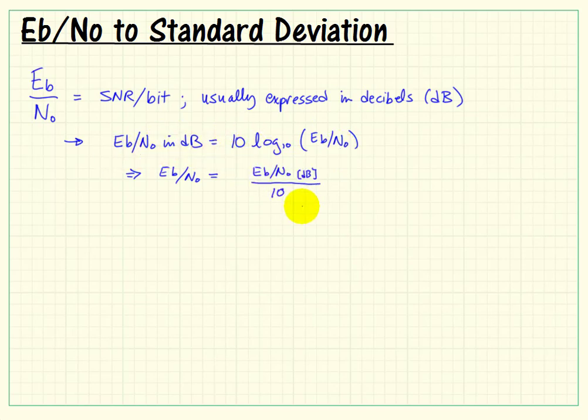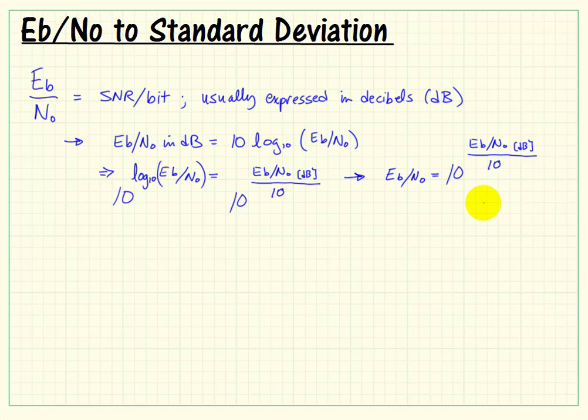If I divide both sides of the equation by 10, and also let's go ahead and keep the log base 10 in there, divide both sides of the equation by 10, and then use both sides of the equation as powers of 10, then we can solve for the ebno as a plane ratio.